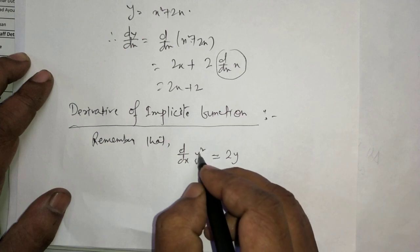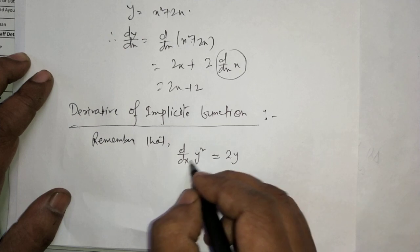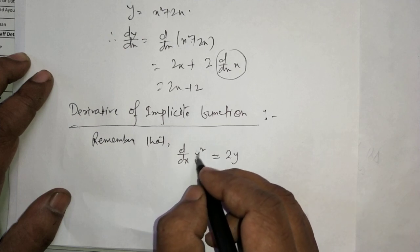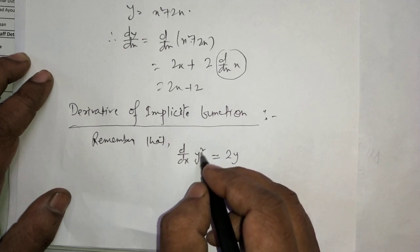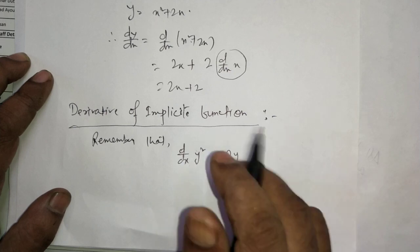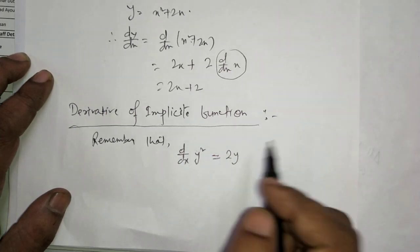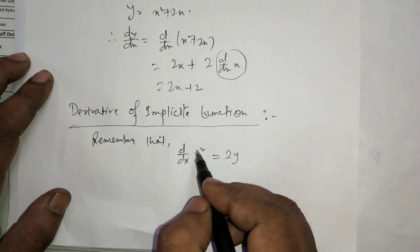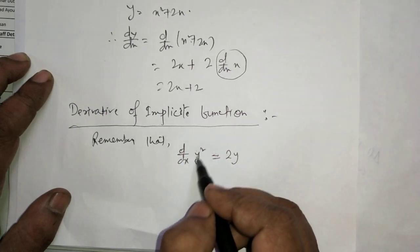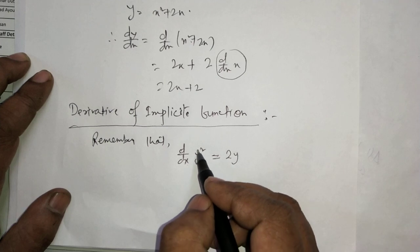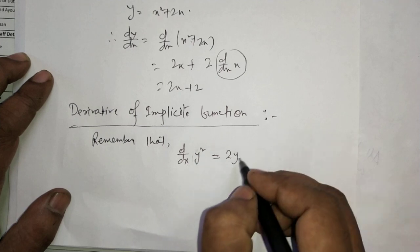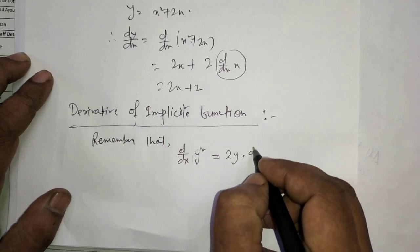Since y and x are different — not the same — we cannot stop at 2y. By the chain rule, we must also multiply by the derivative of y with respect to x. So d/dx of y squared equals 2y times dy/dx.